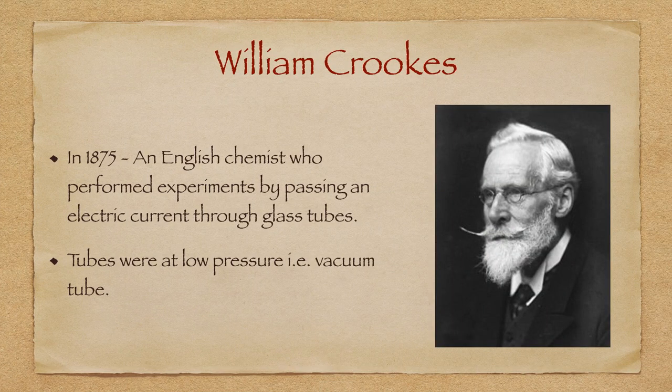William Crookes, almost 70 years later, performed experiments by passing electric currents through glass tubes. The tubes were maintained under low pressure to help ensure a vacuum was present, as he did not want molecules in the air interfering with his results.